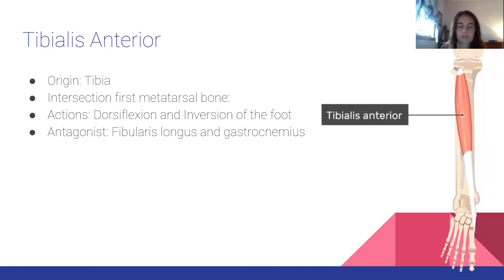The tibialis anterior: Origin: tibia. Insertion: first metatarsal bone. Actions: dorsiflexion and inversion of the foot. Antagonist: fibularis longus and gastrocnemius.